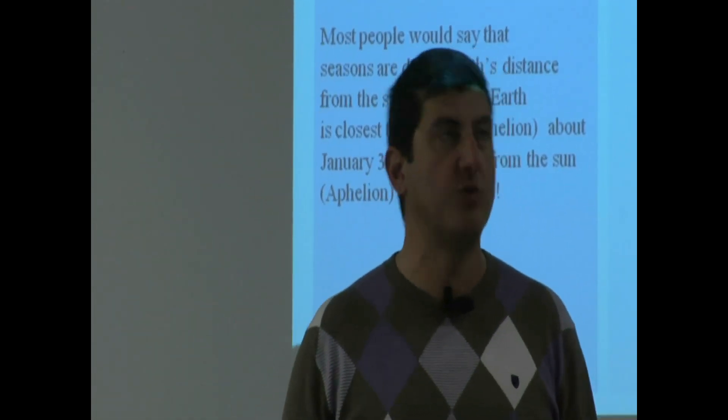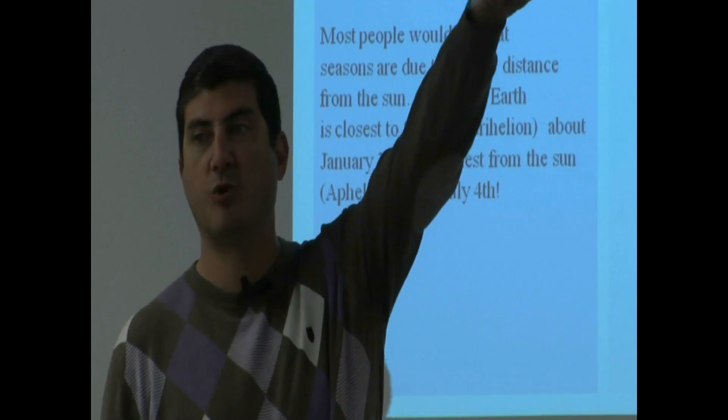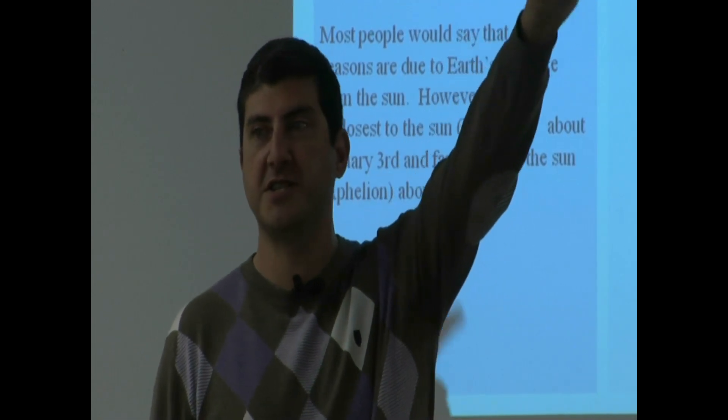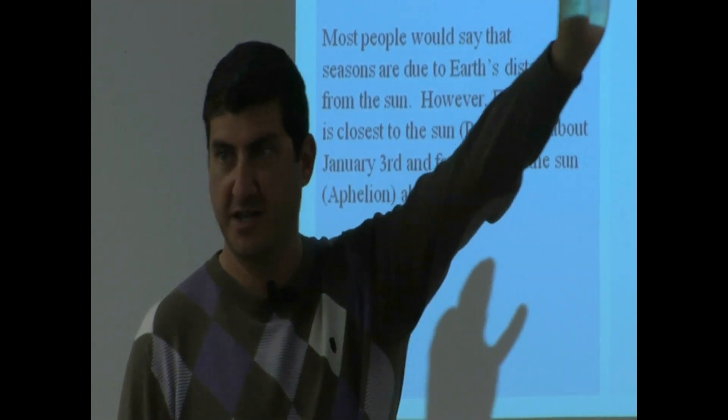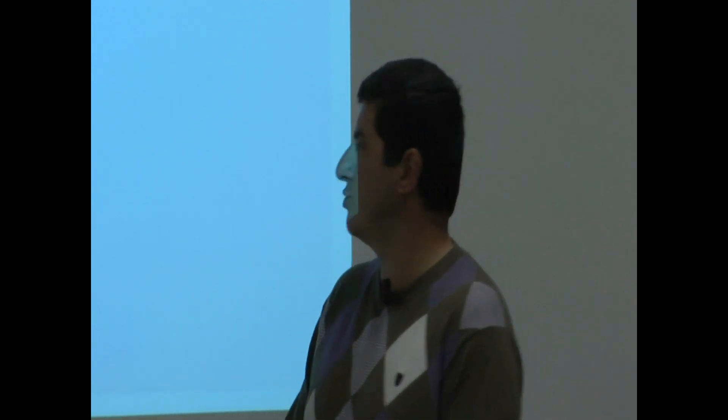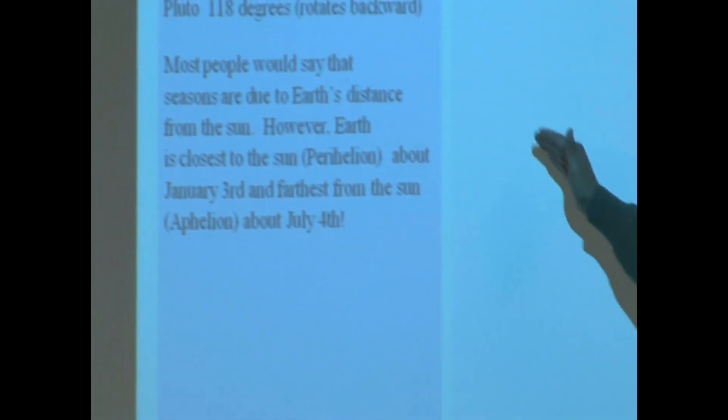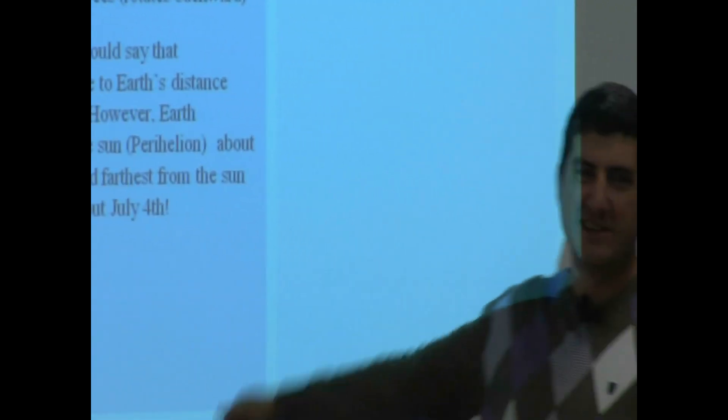So on July 4th, when you're doing your cookout, your barbecue, and celebrating the fireworks, look up at the Sun and say, that's the smallest that the Sun appears in the sky during the whole year. It's far from the Sun. The person who just told you that's the reason for seasons is going to be really shocked. What? If the Earth is far from the Sun in July, then how come it's hot? How come it's summer? Then that gives you reason to explain the next slides. Why do we have seasons then? What's the reason for seasons?